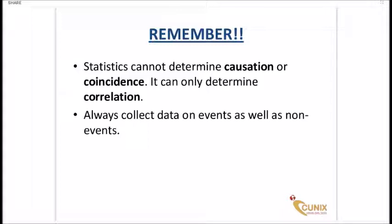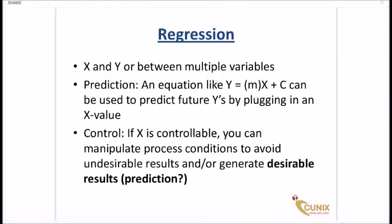Statistics can only determine the relationship. It can only tell you that as X increases, Y is also increasing. But it does not tell you if Y is a cause of increase in X or vice versa. Which is why the second point is important that you should always collect data on events as well as non-events. For example, if you are trying to determine the defects or bugs, you should collect the data not only when there are defects but also when there are no defects.